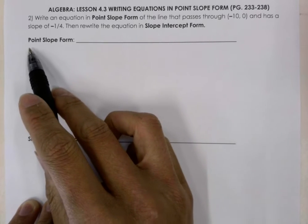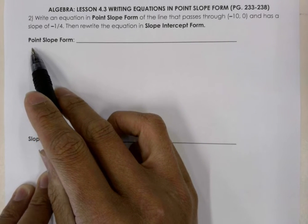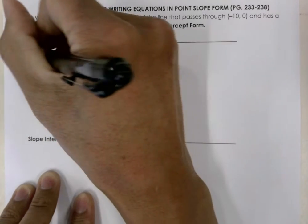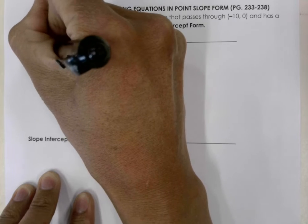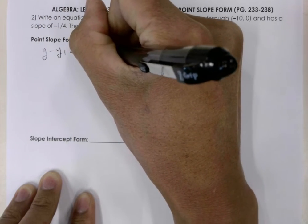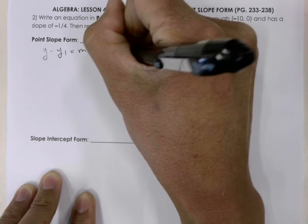So first we're going to write the equation in point-slope form. And if you remember, point-slope form is y minus y1 is equal to m times the difference of x and x1.